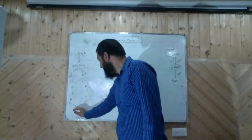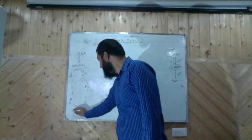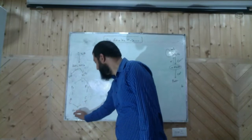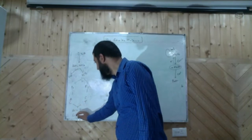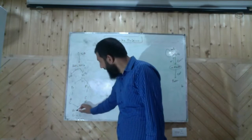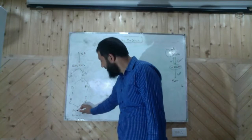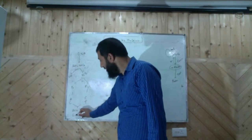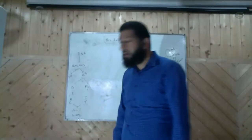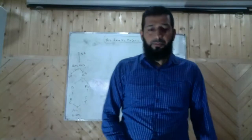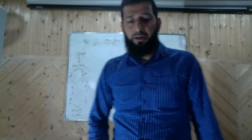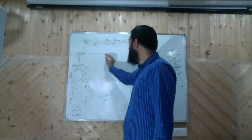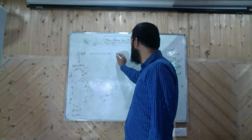Adenine pairs with T and guanine pairs with C. Adenine and thymine have a double bond, and guanine-cytosine has a triple bond. So this DNA is transcribed into RNA.